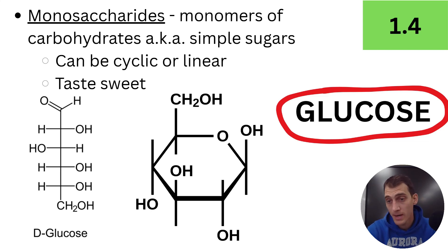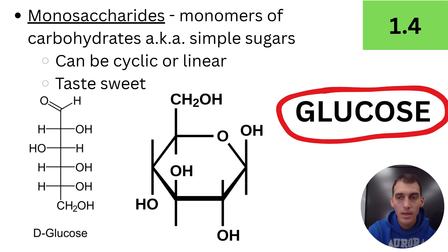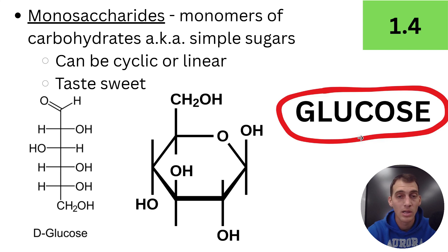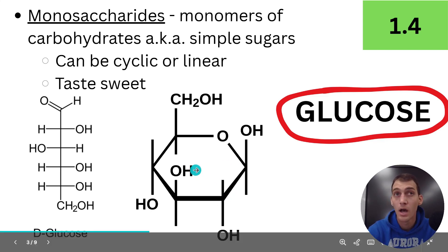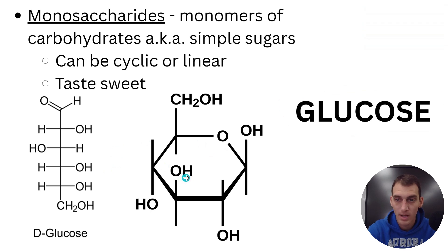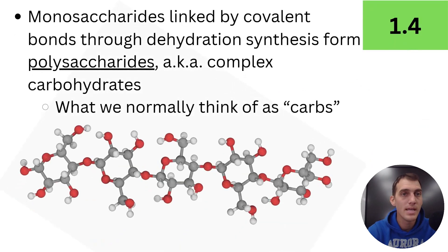Disaccharides are made of two monosaccharides — like sucrose or maltose — and those are also sweet-tasting sugars. But glucose is going to be the mega important monosaccharide we'll talk about a lot in this class. It's made of six carbons, 12 hydrogens, and six oxygens. The linear and cyclic forms shown here are two different conformations of that same molecule, and it's going to come back in a big way.